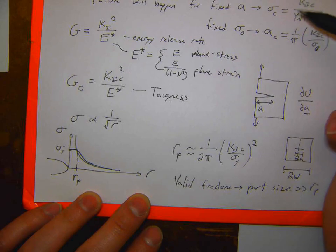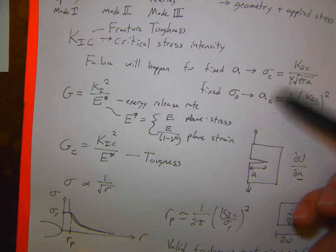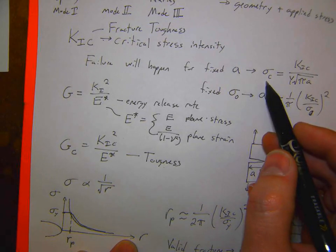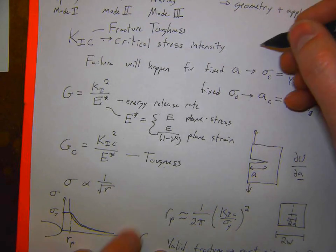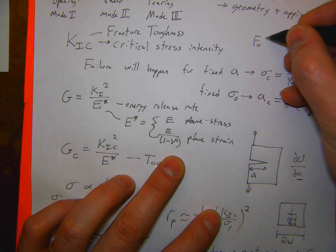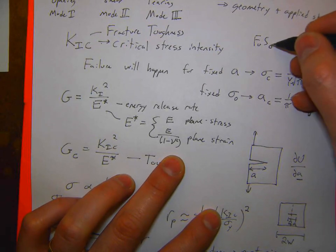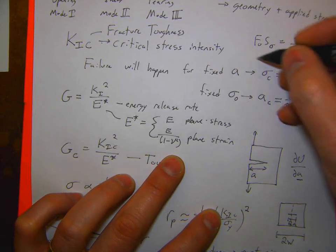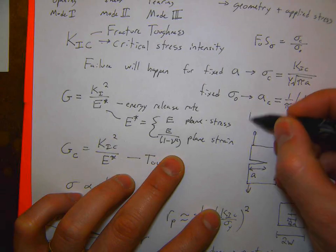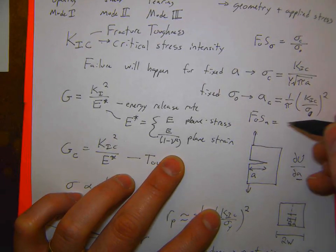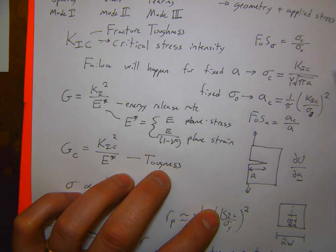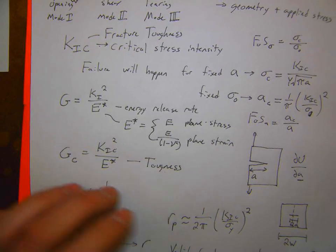We also defined factors of safety for cracks. The factor of safety for stress is the critical stress divided by the applied stress. The factor of safety for flaw size is the critical flaw size divided by the actual flaw size. These are useful relationships to remember for the exam.